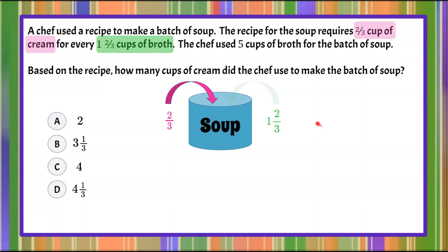So into the pot goes two-thirds cup of cream for every one and two-thirds cup of broth. The chef wanted more soup so they put in five cups of broth. So instead of one and two-thirds they put in five cups.